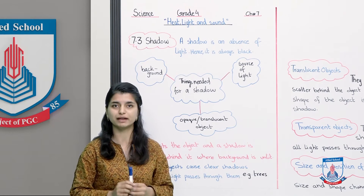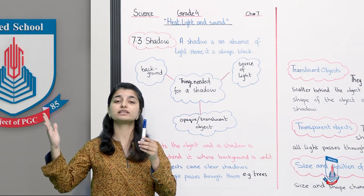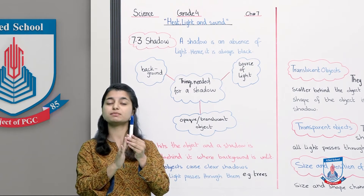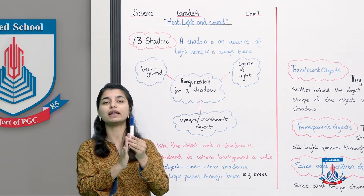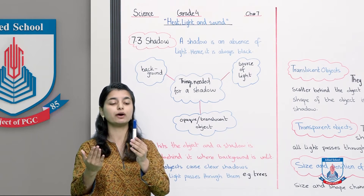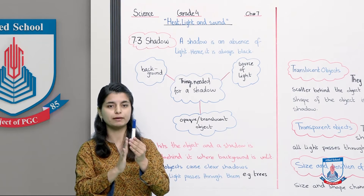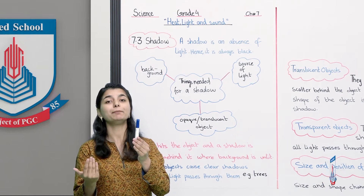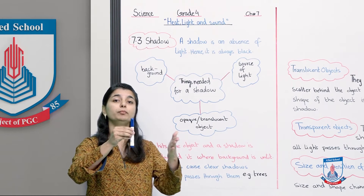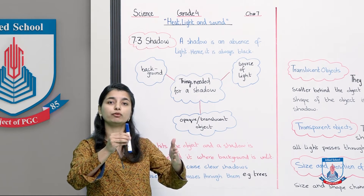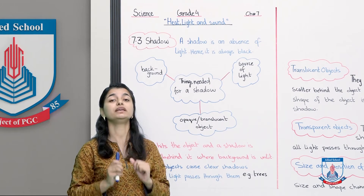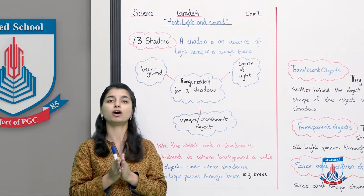For example, consider this object on the board. Light is coming from one side. When light hits the object — a marker in this case — the light cannot cross it because the marker is an opaque object. The light scatters around its sides and cannot get past it. Behind the object, a background receives no light. If there is no light blocked, no shadow forms. That is why the three required things are: the source of light, the object, and the background.